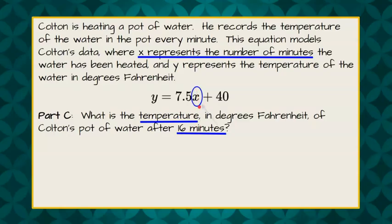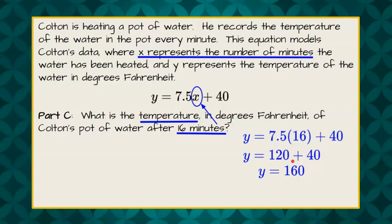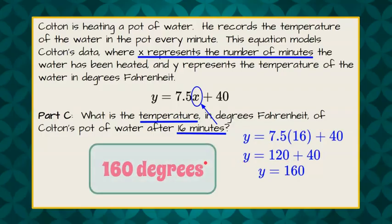They're asking us to use this equation when x is 16, what is y? Y represents the temperature. So we're going to say 7.5 times 16 plus 40. 7.5 times 16 is 120. 120 plus 40 is 160. So we can conclude that after 16 minutes the temperature of our water is 160 degrees.